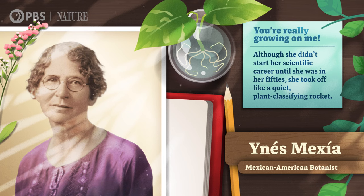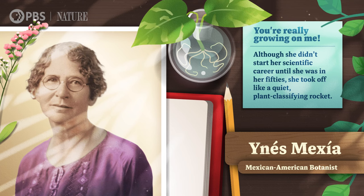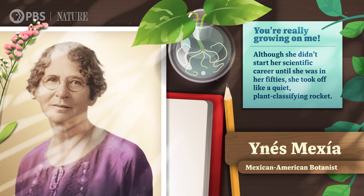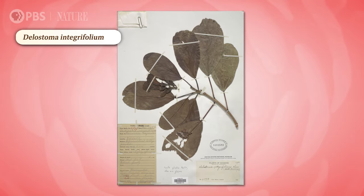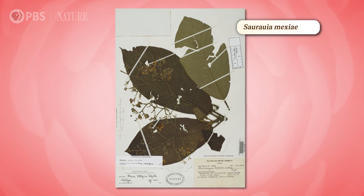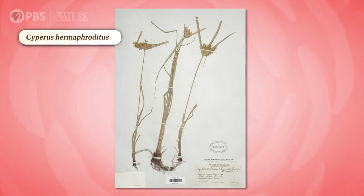These names work like labels on life's big filing cabinet so botanists can organize their knowledge about plants and use it for things like understanding plants' evolutionary history and informing conservation efforts. Adding more labels helps build more knowledge. The Mexican-American botanist Inez Mejia devoted years of her life to that task. Although she didn't start her scientific career until she was in her 50s, she took off like a quiet plant-classifying rocket. She spent two and a half years traveling the Amazon River, identifying around 500 plant species previously unknown to science. Today, over 50 of them are named in her honor.